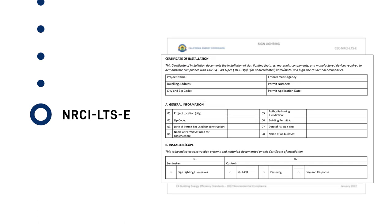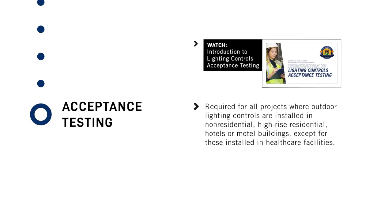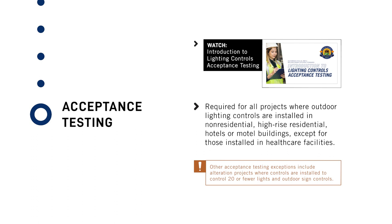Acceptance testing is required for all projects where outdoor lighting controls are installed in non-residential, high-rise residential, hotels or motel buildings, except for those installed in health care facilities. Other acceptance testing exceptions include alteration projects where controls are installed to control 20 or fewer lights, and outdoor sign controls.